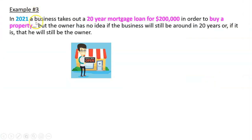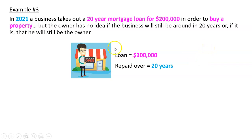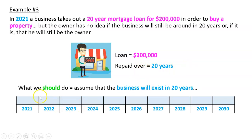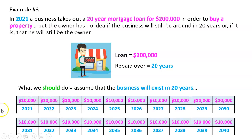One more example. In 2021, a business takes out a 20-year mortgage loan — a loan for a property. The owner has no idea if the business will be around in 20 years or if he'll still be the owner. So here's what we should do. We've got a $200,000 loan for 20 years. We will assume that we're going to repay $10,000 a year every year for the next 20 years. Will the business be around in 20 years? With the going concern assumption, we assume it will be, and we will assume these $10,000 repayments will be made every year for the next 20 years.